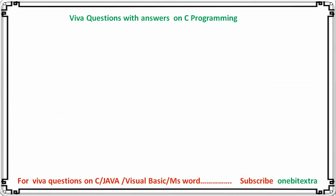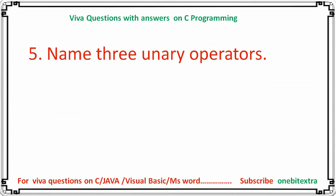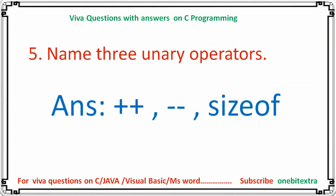Next question: name three unary operators. The answer is: ++, --, and sizeof. ++ is the increment operator — it increases the value by one. -- is the decrement operator — it decreases the value by one. sizeof is used to find the size of any data type.